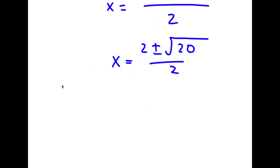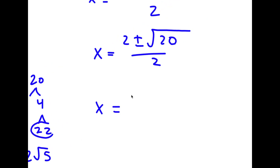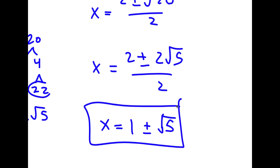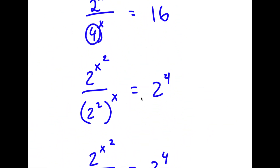The square root of 20 is the same as the square root of 4 times 5, which equals 2 root 5. So x equals 2 plus or minus 2 root 5, over 2. Dividing by 2, I get x equals 1 plus or minus the square root of 5. That is my solution to this problem.